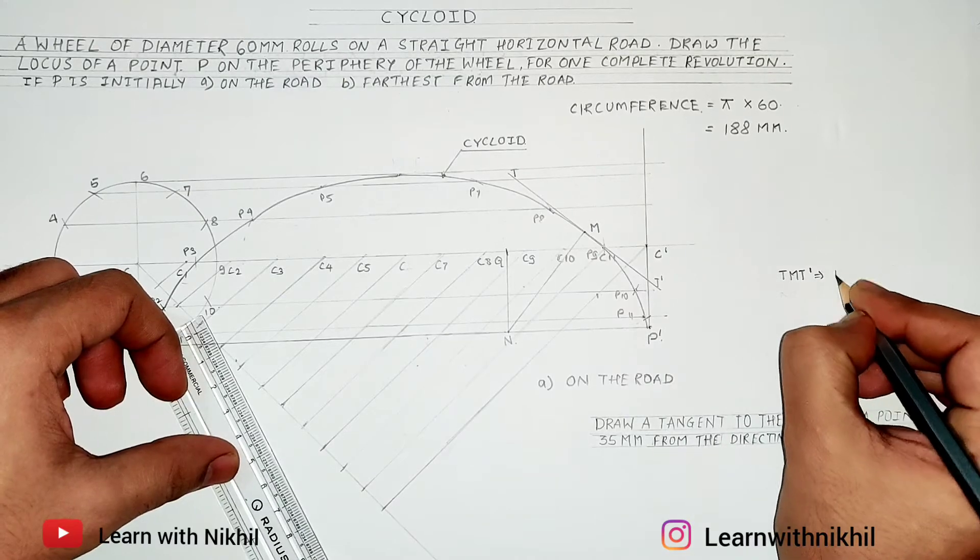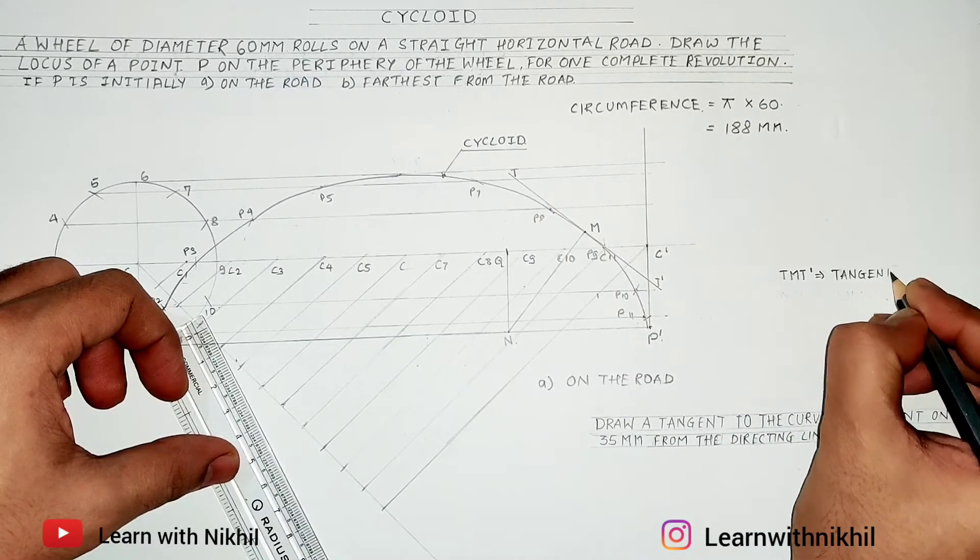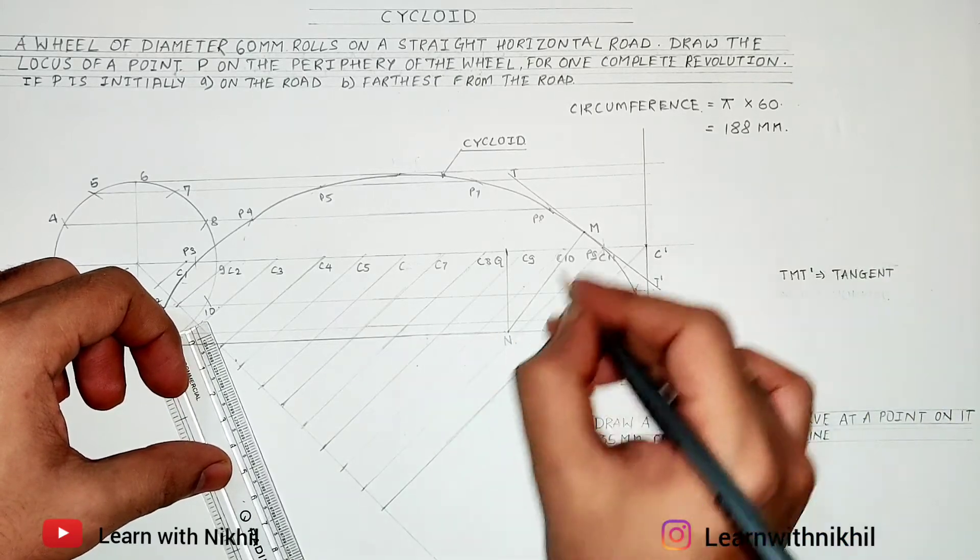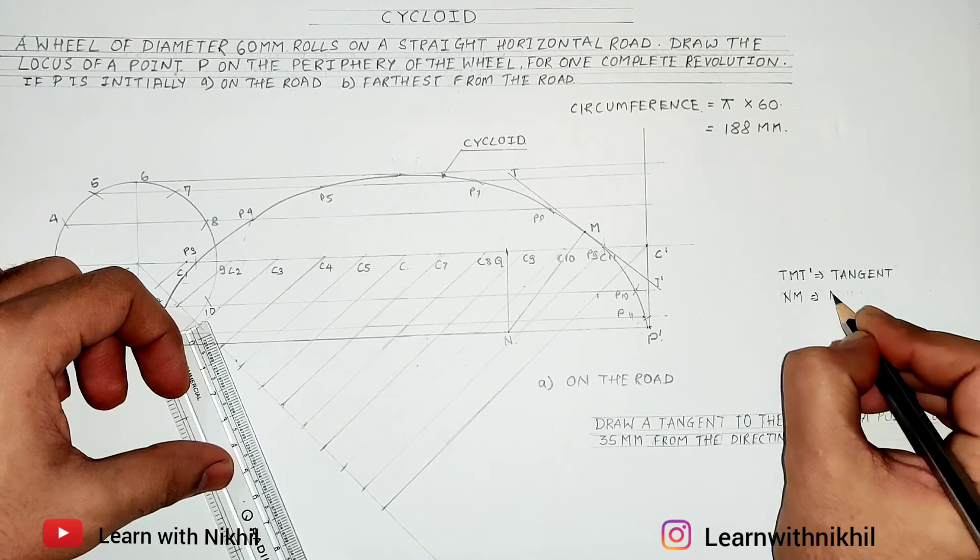is the tangent and NM is the normal. So like this you can draw a tangent and normal to any curve.